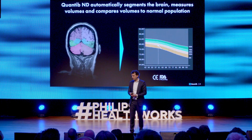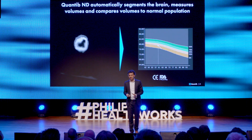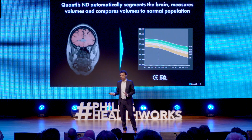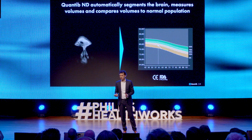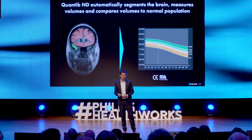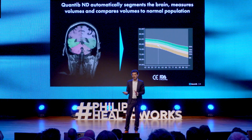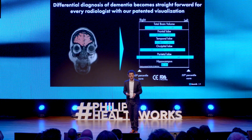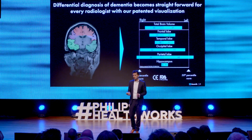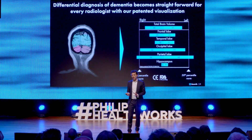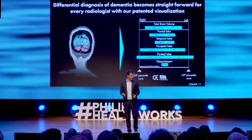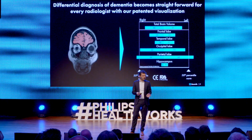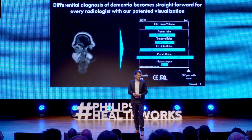And that's exactly what we've built. We measure the brain, give the volume, and we compare that volume to a cohort of 5,000 healthy subjects. We tell the radiologist whether this is a normal brain or an abnormally aging brain. In fact, we dive deeper — we look at the substructures, and we have a patented fingerprint of the disease that distinguishes between the different sub-diagnoses of dementia.